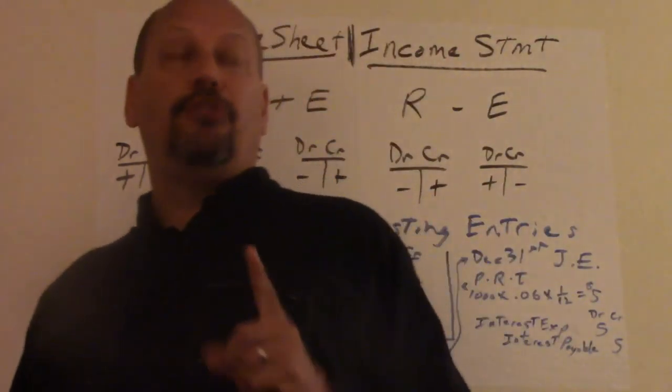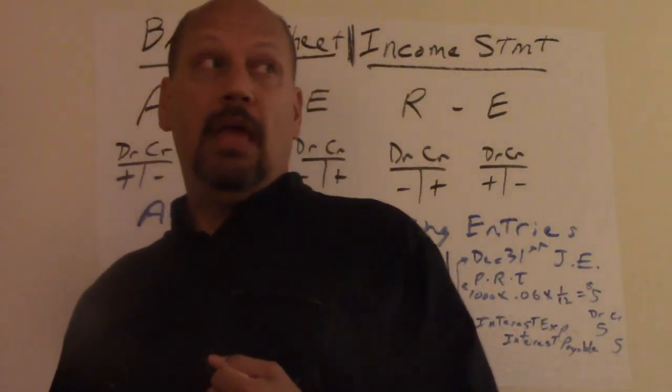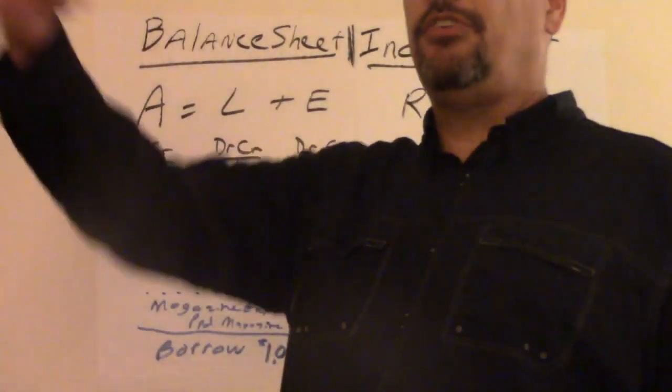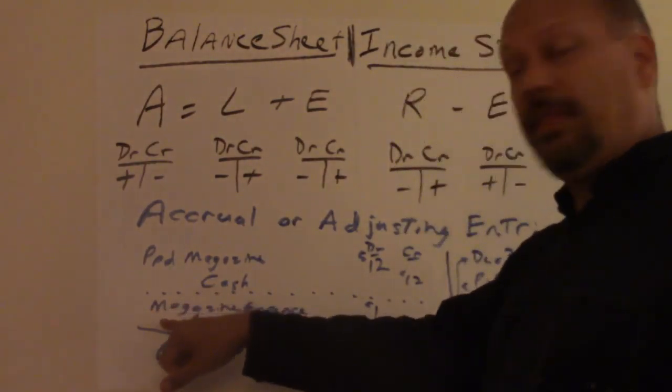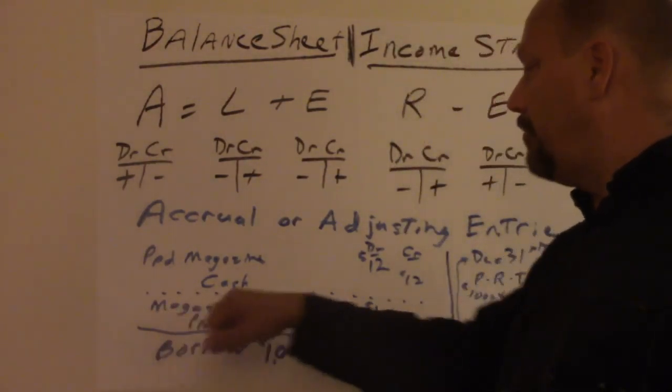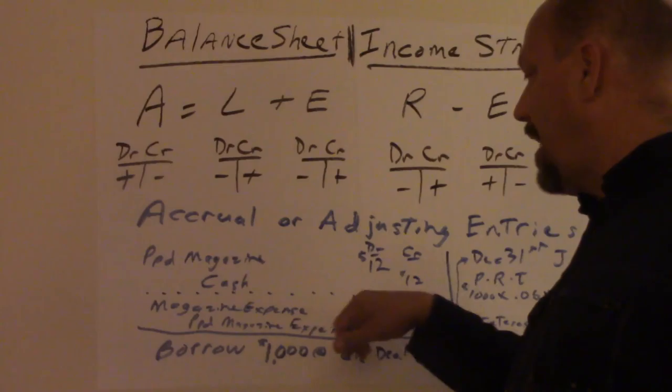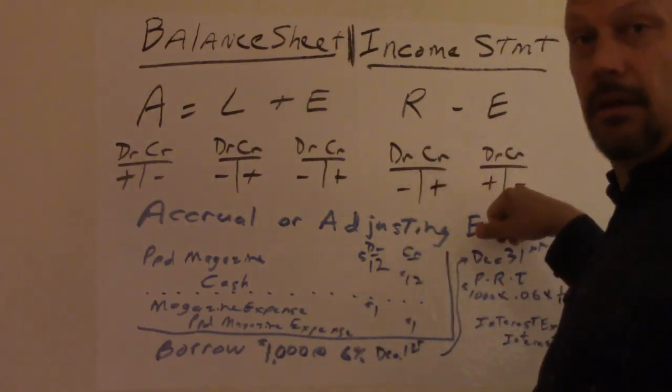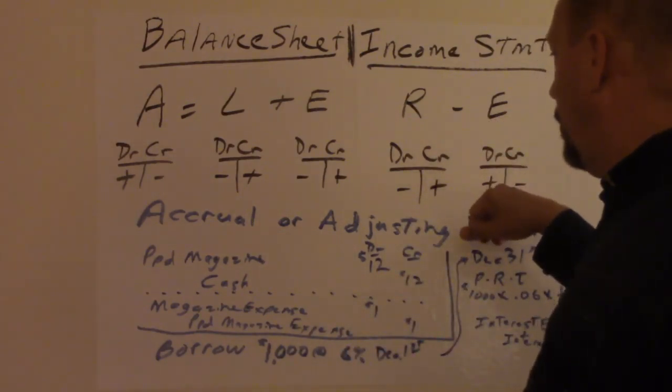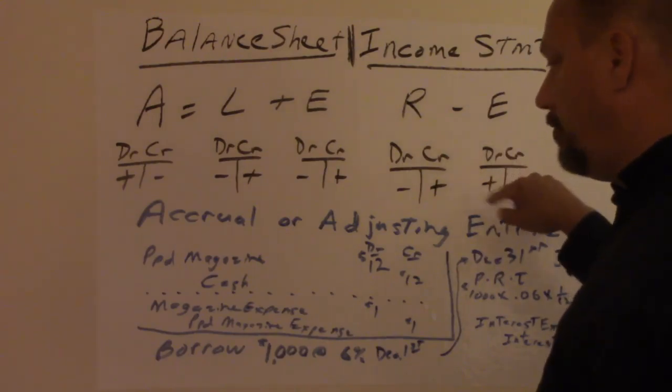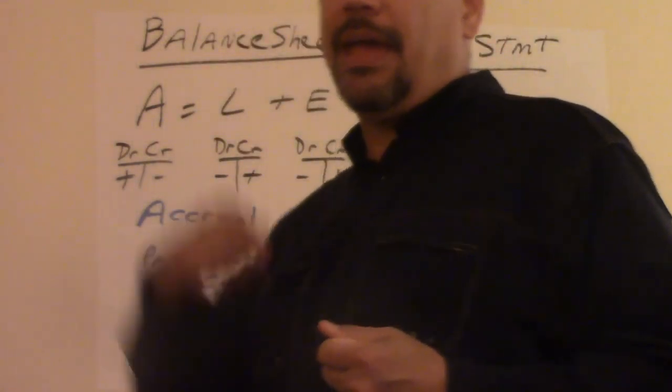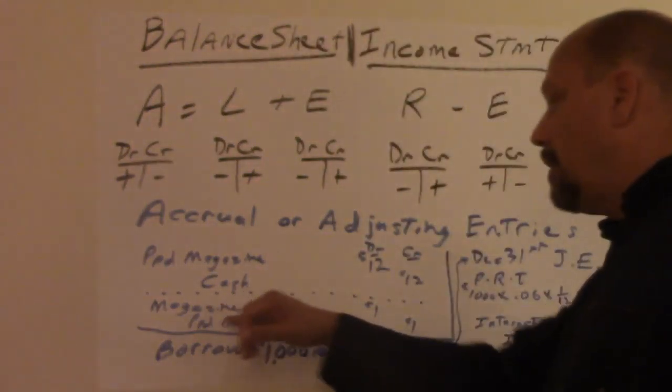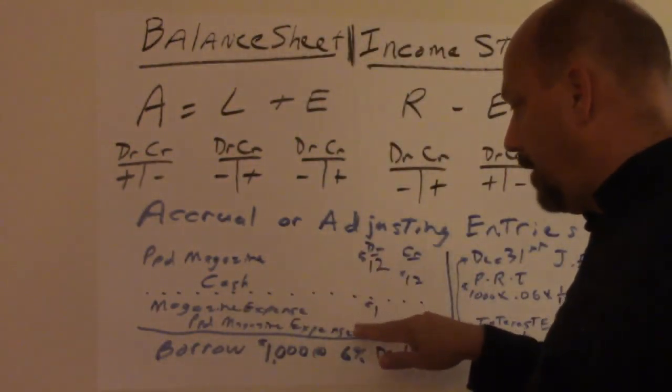However, after one month passes, you received a magazine. So you don't still have $12 worth of magazines to come. You only have $11 because one of them arrived. So at the end of the month, you put down magazine expense as a debit because that has occurred. It increased your expenses. That one technically cost your money now because you received it and you had already paid.